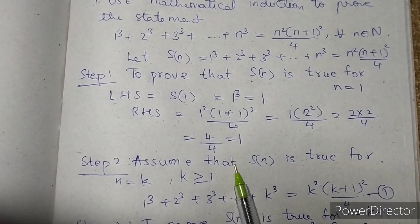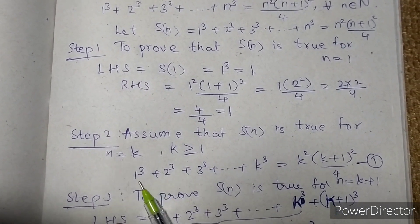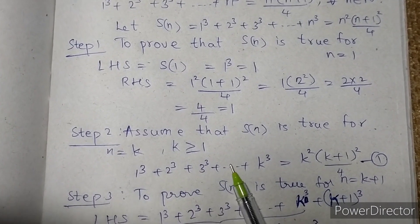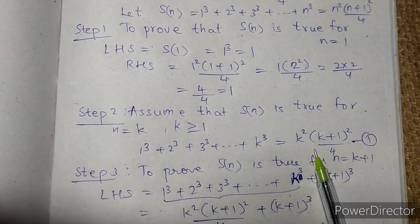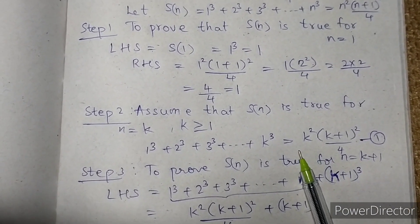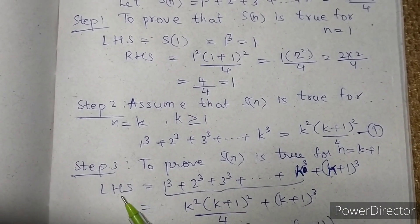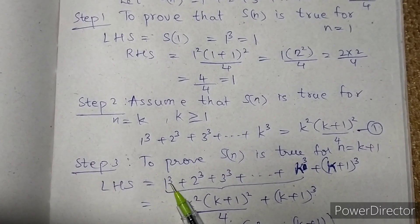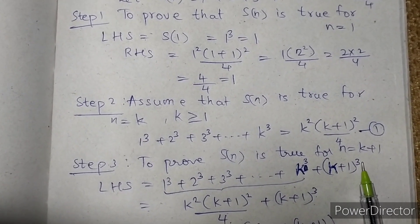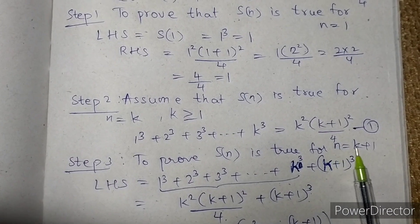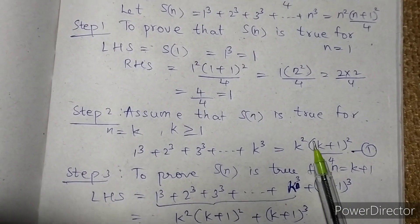Now we assume that this statement is true for n = k. That is: 1³ + 2³ + 3³ + ... + k³ equals k² × (k+1)² divided by 4. Now here we have to prove the statement for n = k+1, so our new term will be (k+1)³.